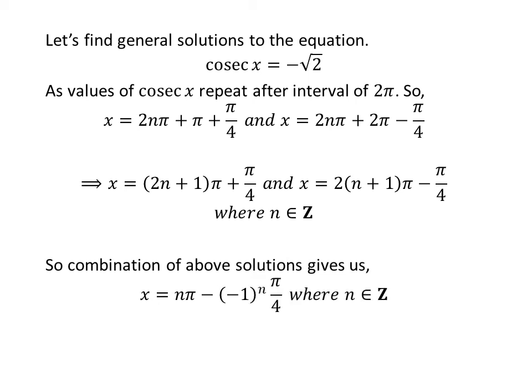We know that 2(n+1) is an even integer and 2n+1 is an odd integer for any n, so the union of these two sets is the set of integers. Also, (−1)^n is −1 if n is an odd number. So, the general solution to the equation is nπ − (−1)^n · π/4, where n is an integer.